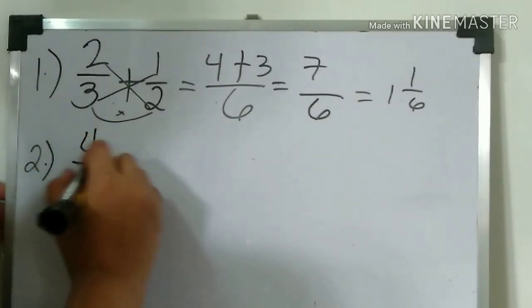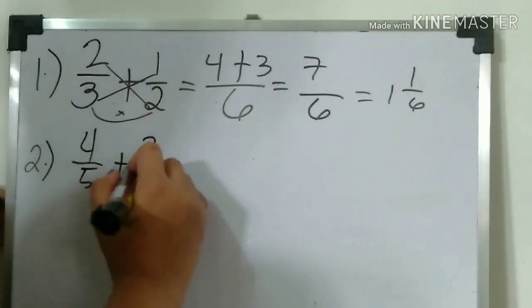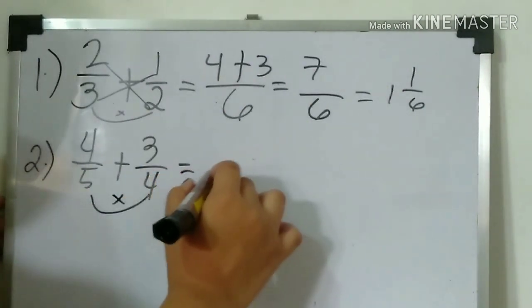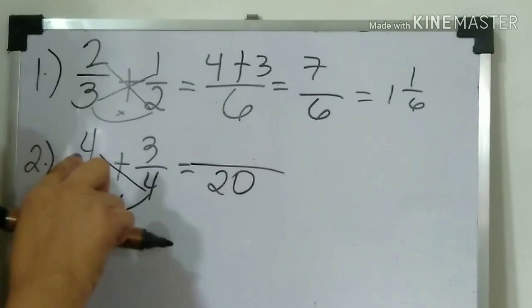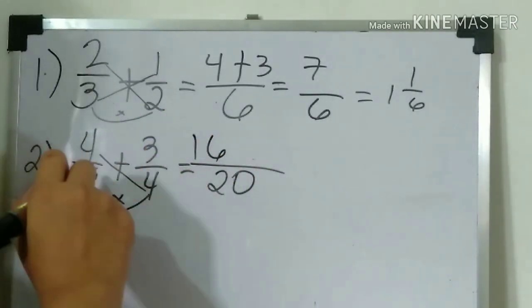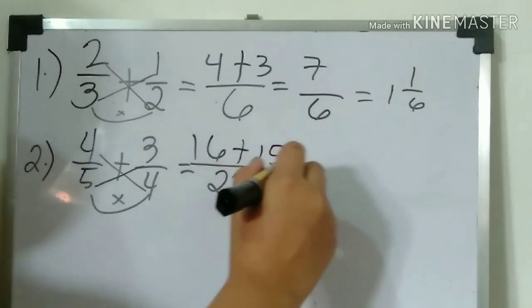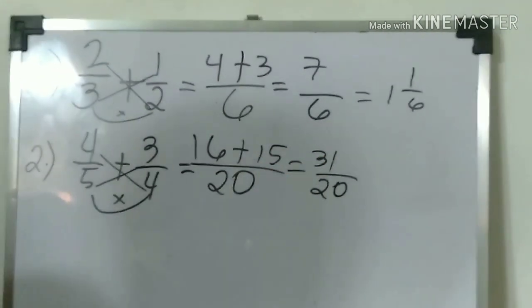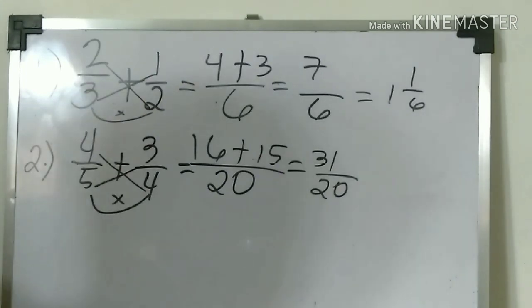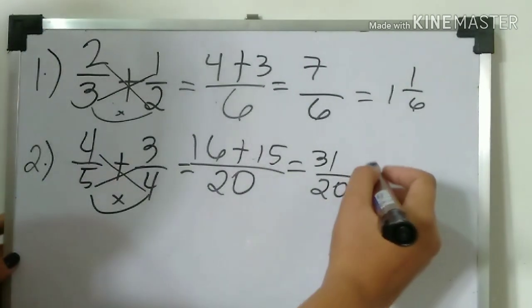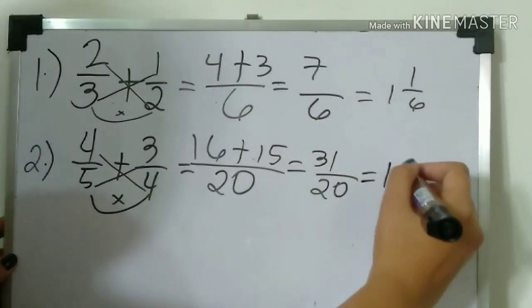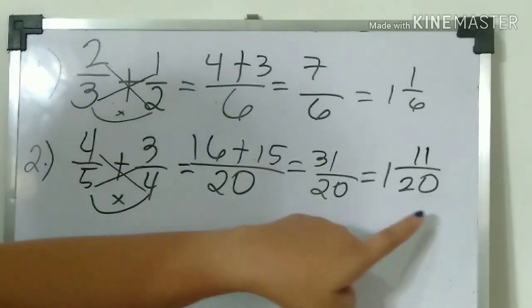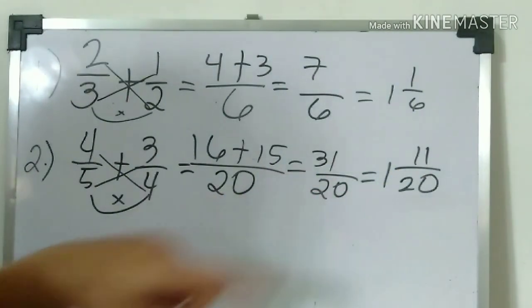Next, number two: four-fifths plus three-fourths. Again, multiply the denominator: five times four equals twenty. Next, cross multiply: four times four equals sixteen, then three times five equals fifteen. So sixteen plus fifteen, the answer is thirty-one over twenty. That's an improper fraction. Change into mixed number: thirty-one divided by twenty, the answer is one with remainder eleven.